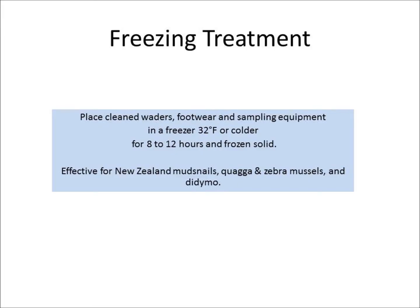The next treatment method that we will demonstrate is freezing. Place cleaned waders, footwear, and sampling equipment in a freezer kept at 32 degrees Fahrenheit or colder. Keep your gear in the freezer for eight to twelve hours until it's frozen solid. This treatment method is effective for New Zealand mud snails, quagga and zebra mussels, and didymo.